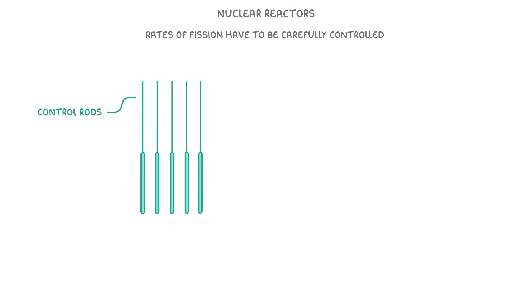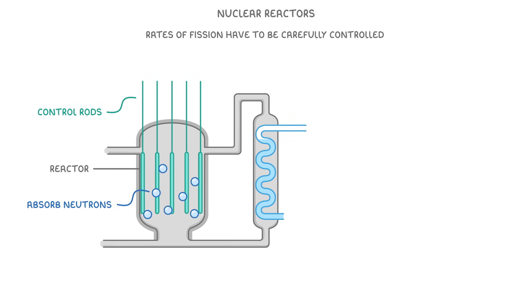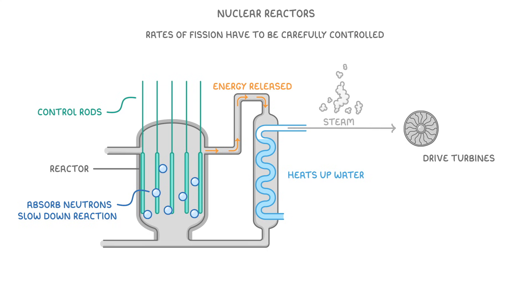This is mainly achieved by control rods, which can be lowered into the reactor to absorb neutrons and slow down the reaction. Meanwhile, the energy released from the process is used to heat up water and turn it into steam, which can then drive turbines that are connected to an electricity generator.